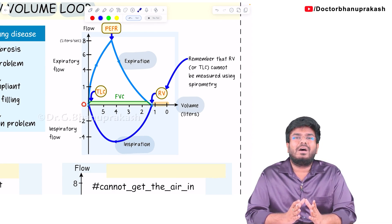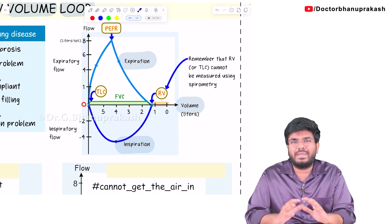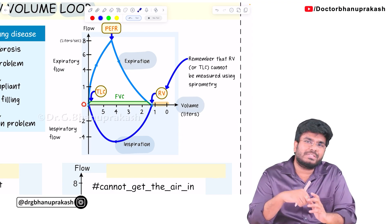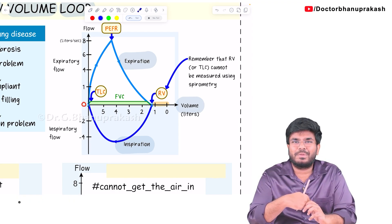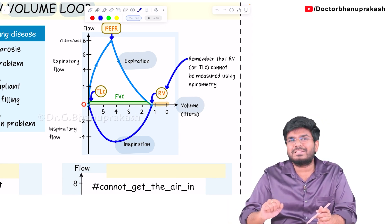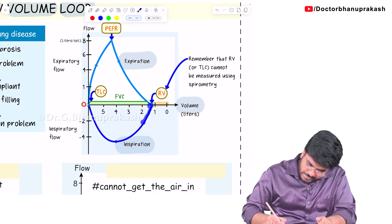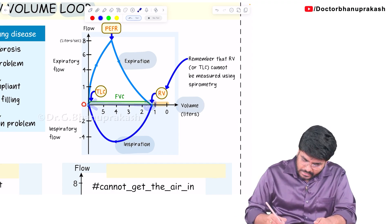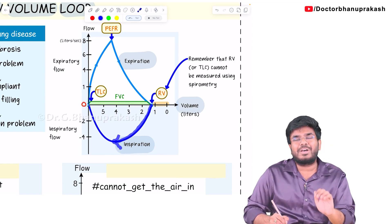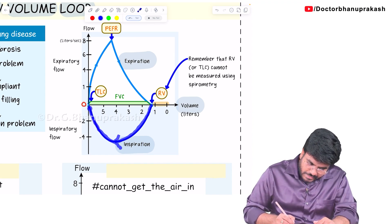Think of it like driving to the hospital. When you start from home, you start the car slowly — your parents are watching. Once you take the turn out of your street, you start to increase the velocity. In the same way, during inspiration, the velocity starts from zero, gradually increases and increases. But when you are reaching your destination hospital, you start to decrease your speed. Similarly, at the end of inspiration, the velocity decreases and comes back to zero.